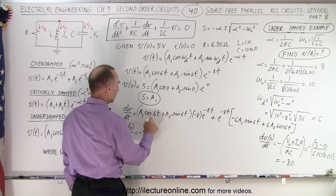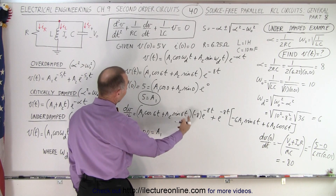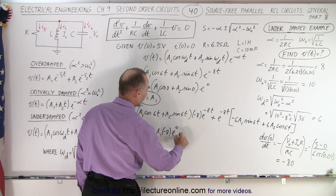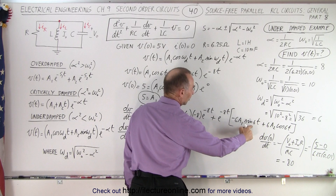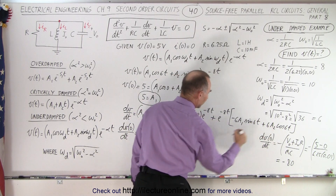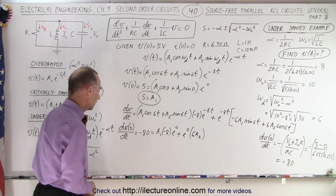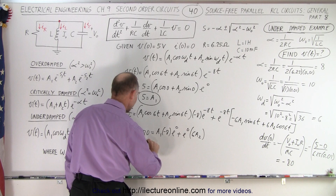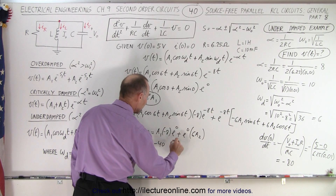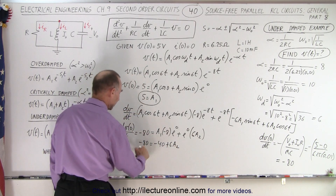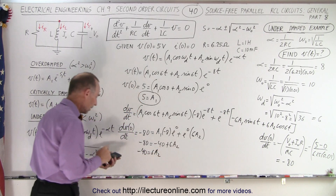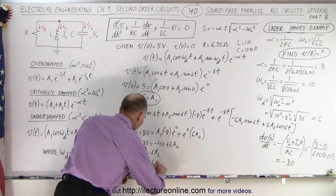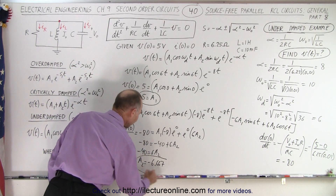Plugging t=0 into the derivative expression: cosine(0)=1 gives us A1 times 1; sine(0)=0 eliminates that term; e to the 0 equals 1. So we get minus 80 equals minus 8 times A1 plus 6A2. Substituting A1=5: minus 80 equals minus 40 plus 6A2, giving minus 40 equals 6A2, so A2 equals negative 6.667.